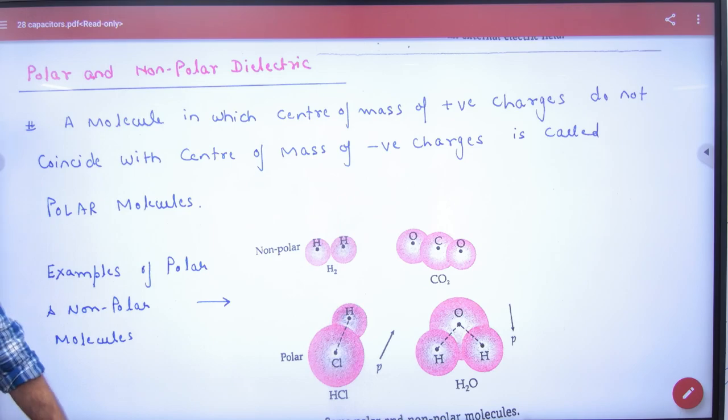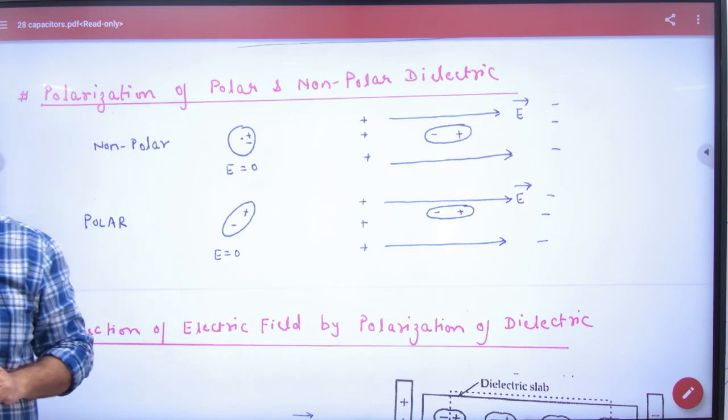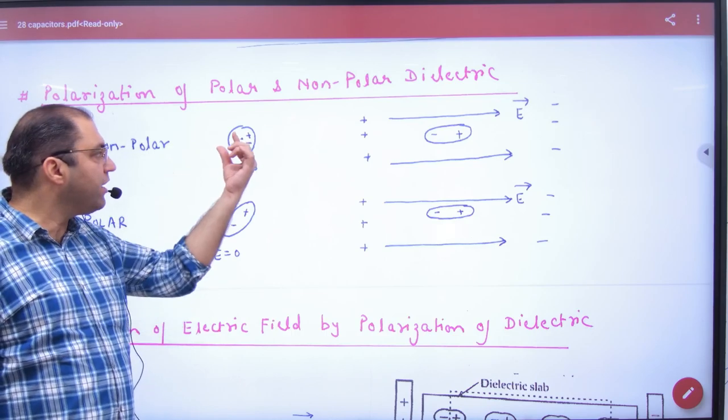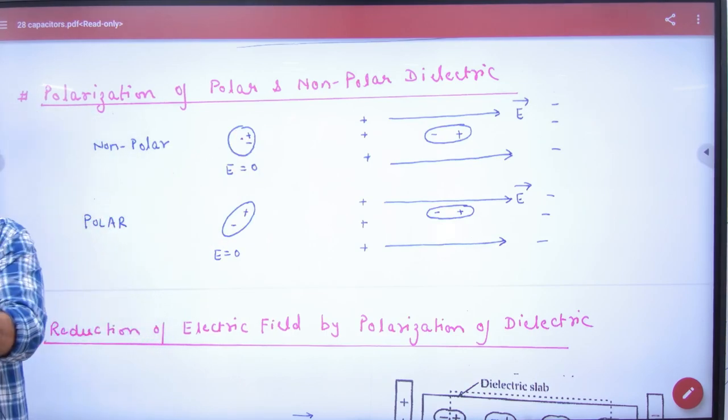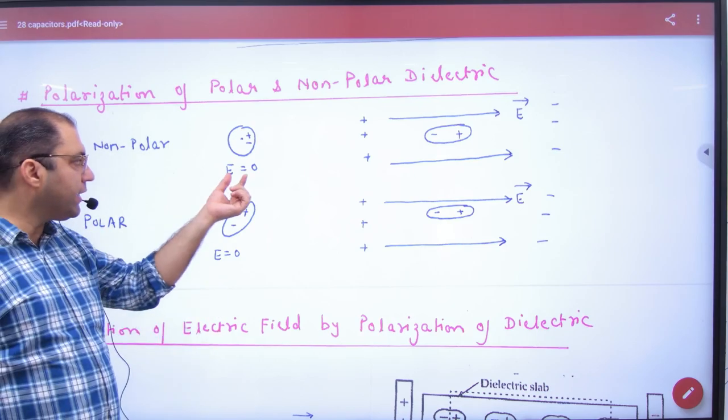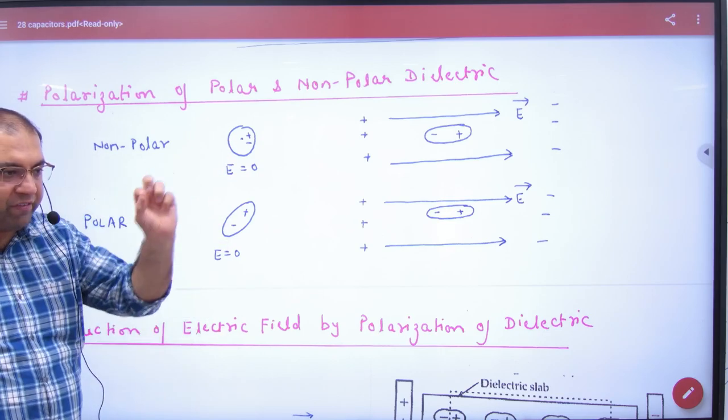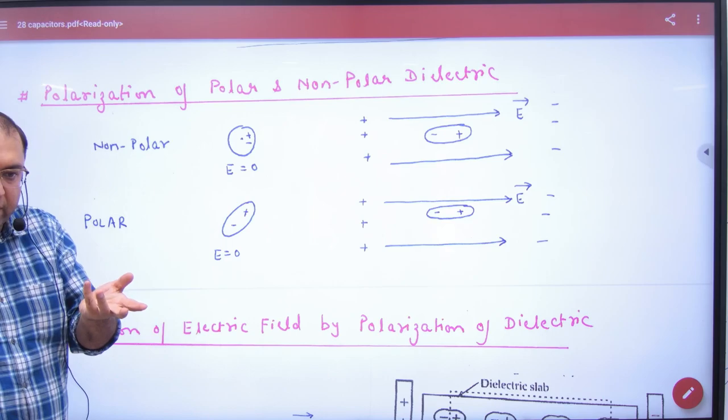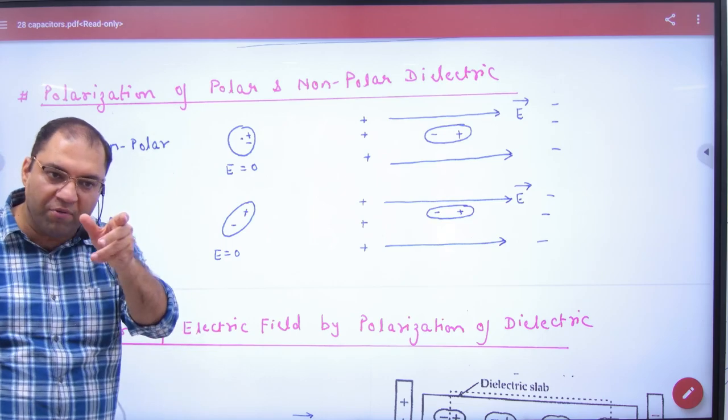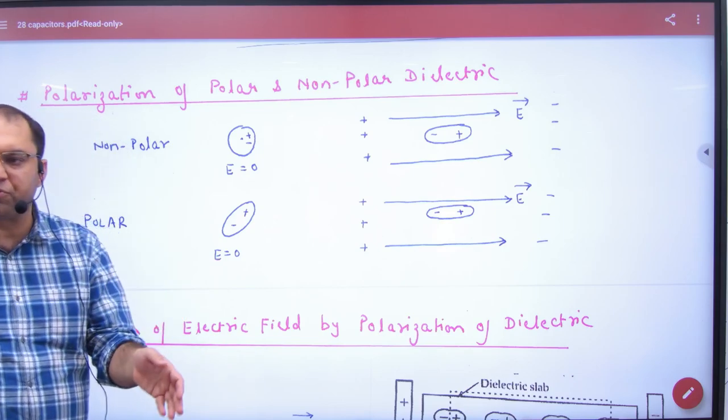So if we discuss in the diagram, polarization of polar and non-polar dielectric. Non-polar is where the center of mass of positive and negative coincide. When I have not placed an external electric field, positive and negative are at one point. And polar has positive and negative separated even without an electric field.